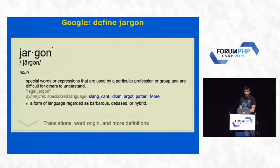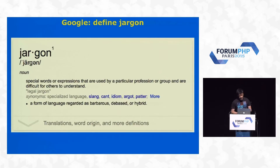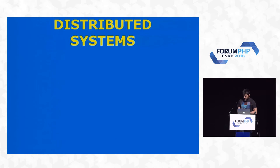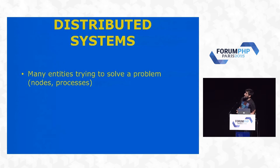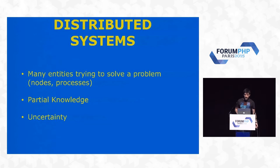The problem I had when I started learning about distributed systems is that there is a lot of jargon, a lot of terminology. Even if it has the same words as those used in other parts of computer science, they don't mean the same in the distributed systems literature. In a distributed system, we have many entities trying to solve a problem — they could be called nodes or processes. These nodes have partial knowledge of what's happening in the whole system, and there is a degree of uncertainty. You never know what the other node in the system knows.